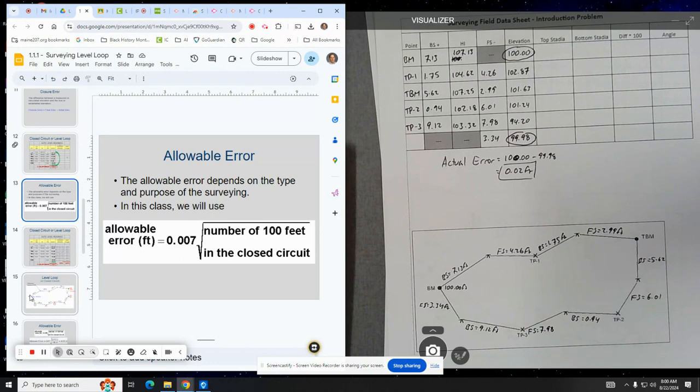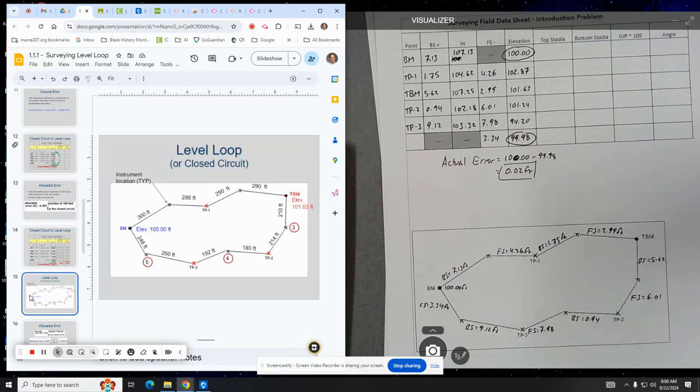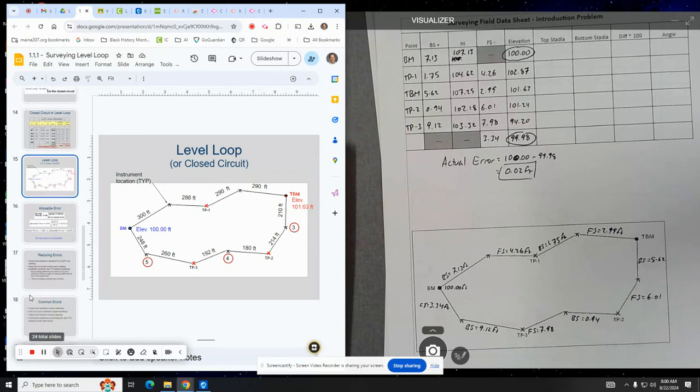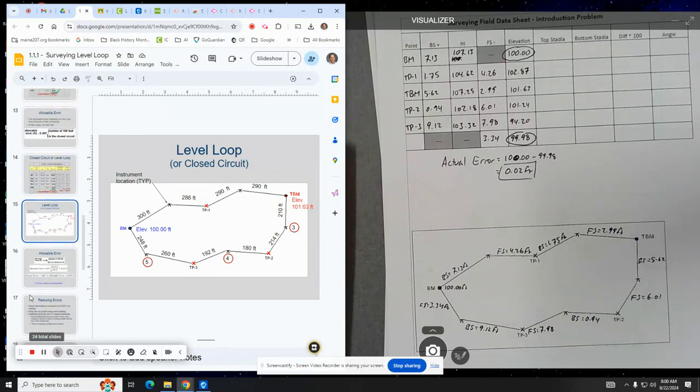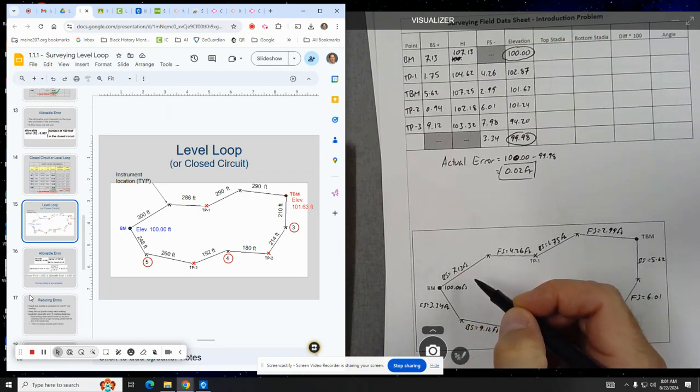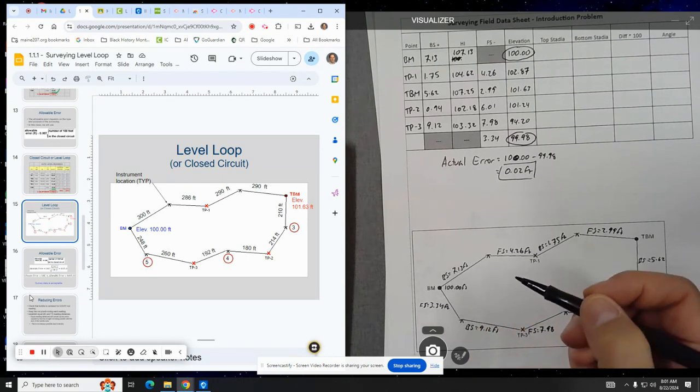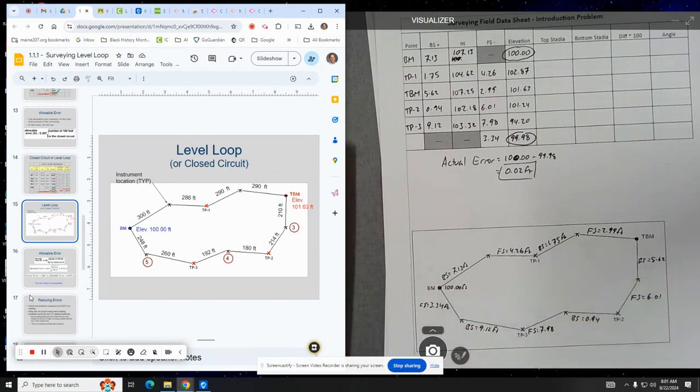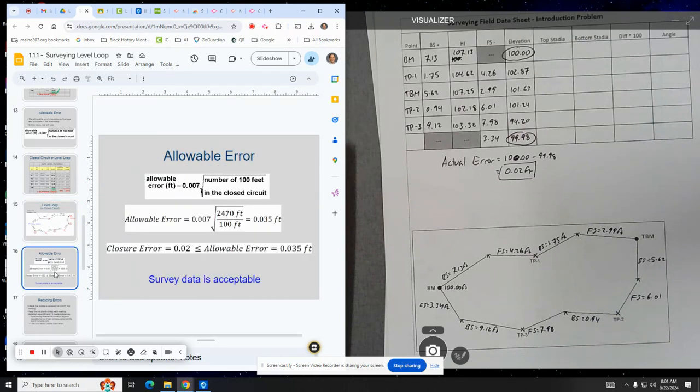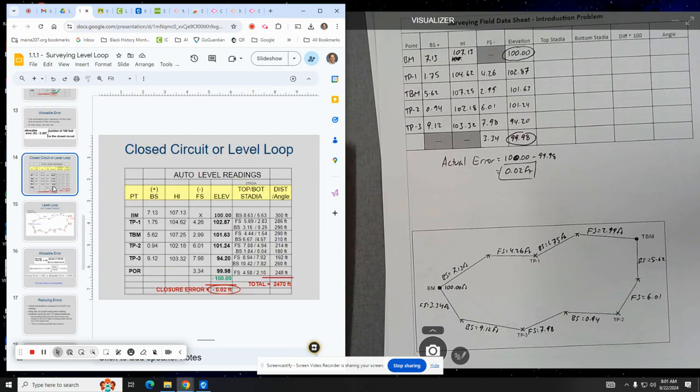So it sounds kind of weird. But remember the way in which we find the distance is we use the top stadia and bottom stadia from, when we take our readings, we don't just take that middle reading. We take the bottom stadia, the top stadia, the bottom stadia, we take the difference, multiply by a hundred, and go from there.